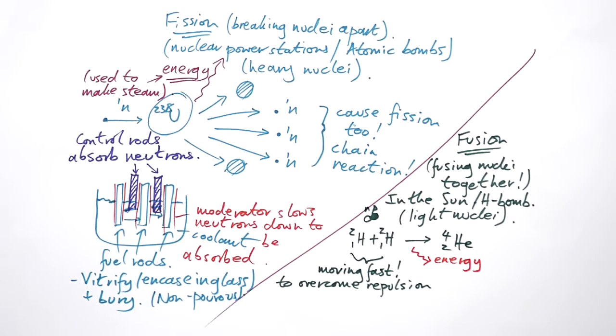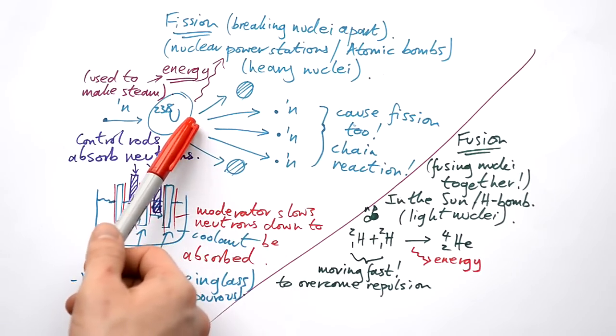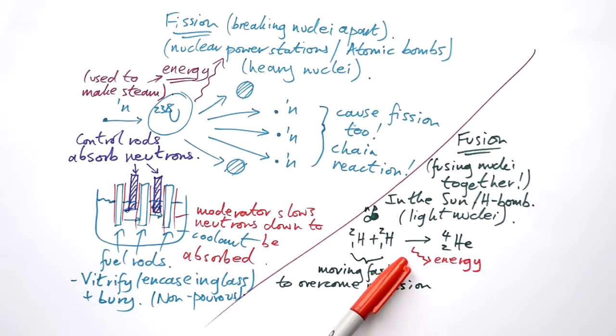Now you might be wondering at this point, hang on a second. If we break nuclei apart, we get energy. If we smush them together, we also get energy. How is that possible? Well, there's a very good reason for that, but that's only to do with A-level. If you want to know about that, it's in my binding energy video.